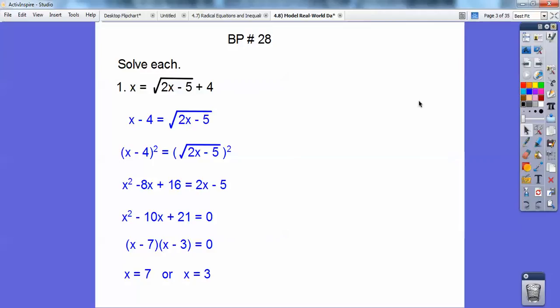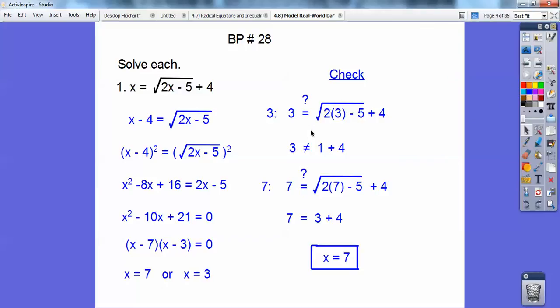And then I get seven or three. And I have to check both seven and three because my chances are probably one of them, maybe both of them, won't check out. It looks like three doesn't check out. I get three equal to one plus four, and that doesn't work when I plug in three for right there and three for right there. So three doesn't, but seven does, so the answer is seven.